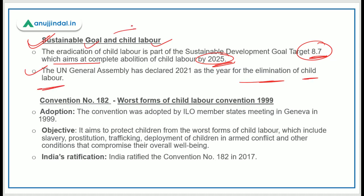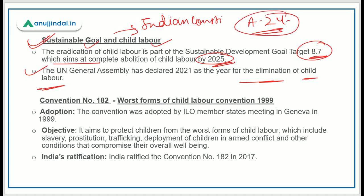Regarding the Indian Constitution, Article 24 prohibits child labour in any factory, mine, or any other hazardous place. This provision has been provided under Article 24 of the Constitution.